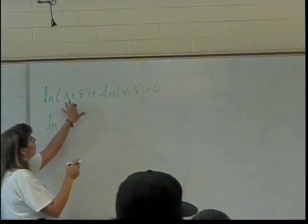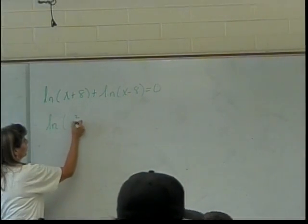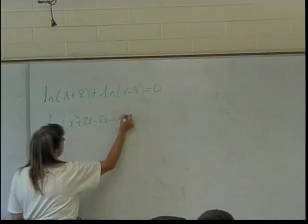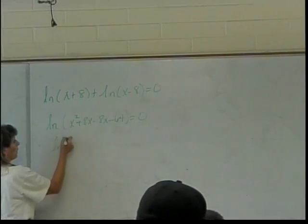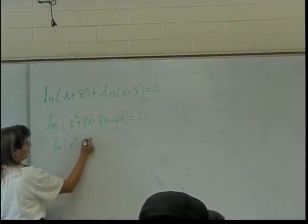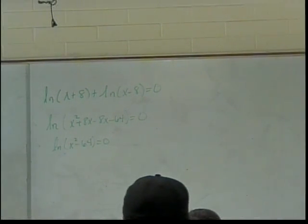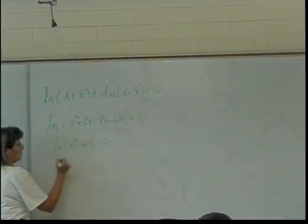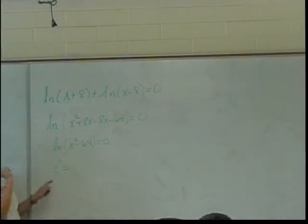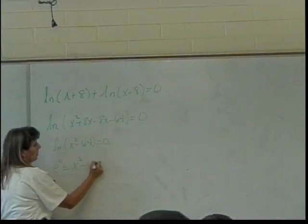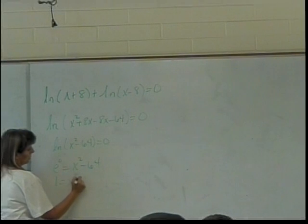The natural log of, I'll multiply these two things together, so that'll give me x squared plus 8x minus 8x minus 64 equals 0, or simplify the natural log of x squared minus 64 equals 0. Now what? Yeah, change to exponential form. So it will be e to the 0 is equal to, yes, that's 1, but the other side for the exponential form is the x squared minus 64. So I have 1 equals x squared minus 64.